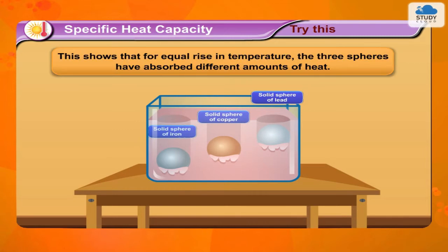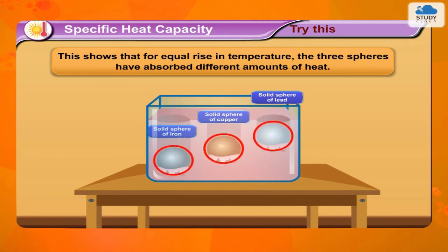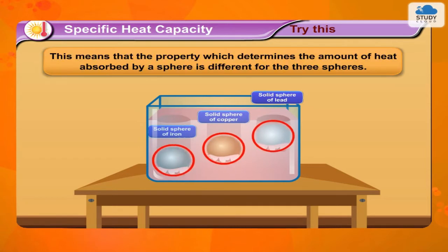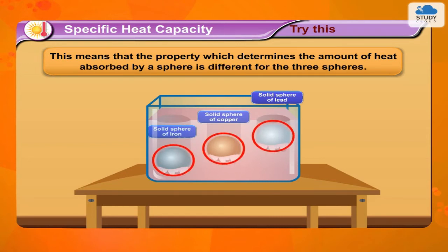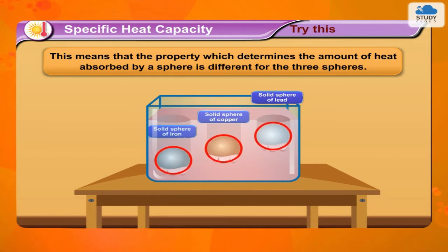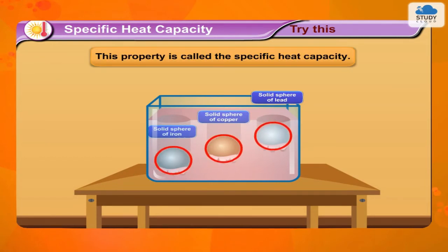This shows that for an equal rise in temperature, the three spheres have absorbed different amounts of heat. This means that the property which determines the amount of heat absorbed by a sphere is different for the three spheres. This property is called the specific heat capacity.